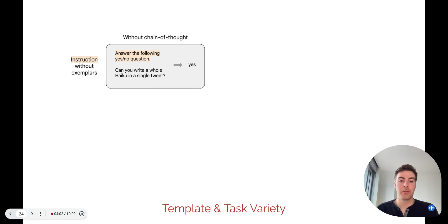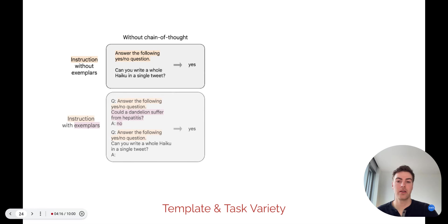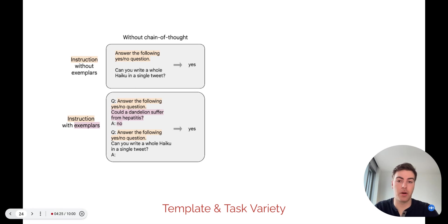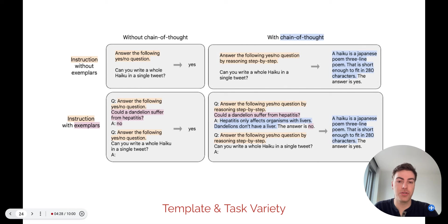We fine-tune our model with a wide combination of input formats. Here you see an instruction to answer a question about a haiku without any examples — this is known as zero-shot prompting. Here you see the same instruction and question but with examples in the input, so the model can learn the input-output pattern — this is few-shot prompting. And lastly, we also include chain-of-thought prompting patterns in fine-tuning, where the model is trained to produce an explanation with its answer.